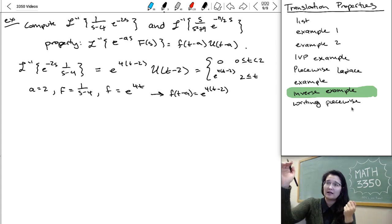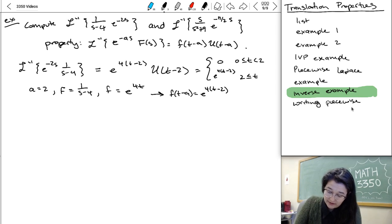All right, what the U does is it's zero and then it's one, which means the function entirely is the F of T minus A. Let's go ahead and try another example.